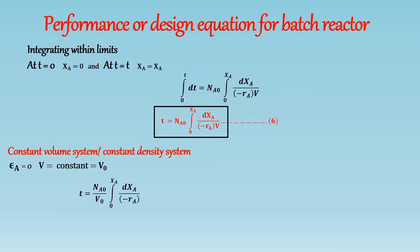And as we know, NA0 divided by V0 is equal to CA0. Hence equation becomes... So this is the performance equation for batch reactor for a constant volume or constant density system.